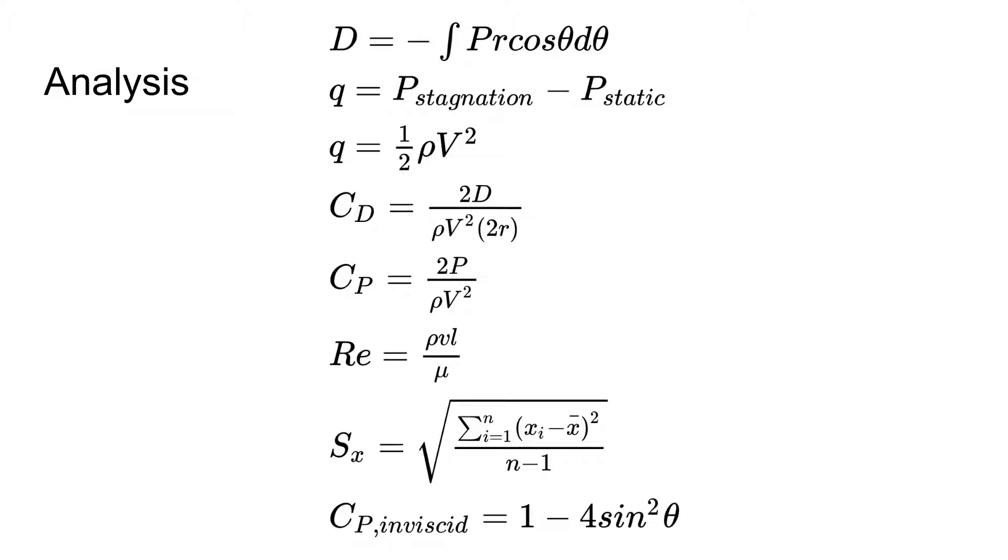Dynamic pressure can be calculated as the difference between stagnation and static pressures, or as one half the density times the velocity squared. Coefficient of drag is calculated as the drag force divided by the dynamic pressure times the characteristic length, in our case the diameter. Coefficient of pressure is defined as the total pressure force divided by the dynamic pressure. The Reynolds number is equal to the density of the fluid times the velocity of the fluid and the characteristic length of the body, all divided by the viscosity of the fluid.